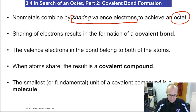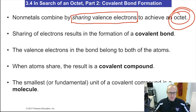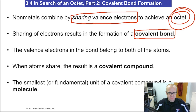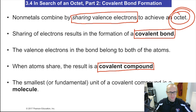Nonmetals will combine and share valence electrons to achieve the coveted octet. They will share electrons and they will form what is called a covalent bond. In the covalent bond, each atom in the bond has the electrons — they both are counting them as part of their octet, so they both have an octet. When atoms share their electrons, they result in a covalent compound, so nonmetals form covalent compounds. The smallest or fundamental unit of a covalent compound is called a molecule.